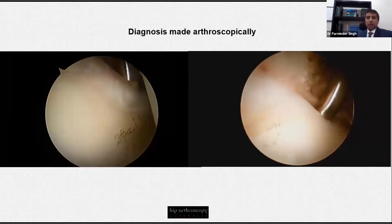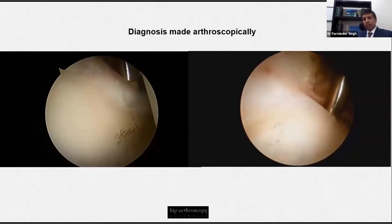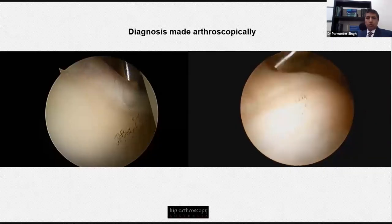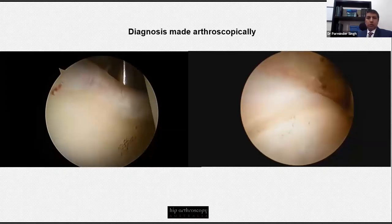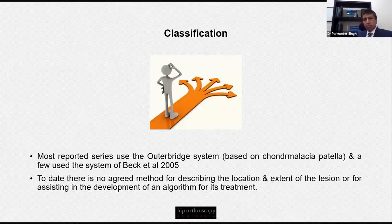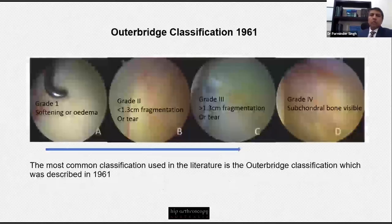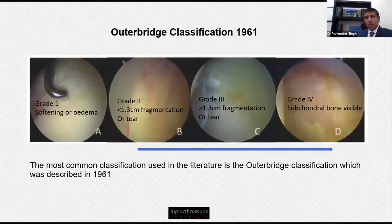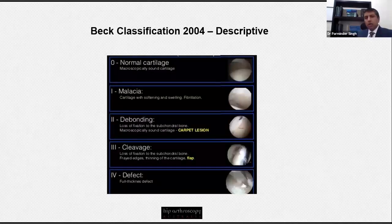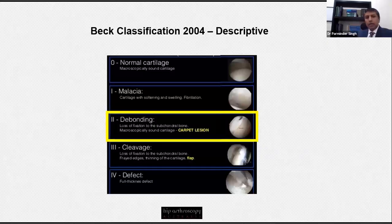Once a wave sign is diagnosed, one must classify the lesion. The most widely reported classification systems in the literature are the Outerbridge and the Beck classifications, but there is no universal agreement on which to use. The Outerbridge classification was originally designed for the knee based on the patella and doesn't really describe what we find in the wave sign. Martin Beck was the first to describe the wave sign in his classification, marking it as grade 2 and describing the cartilage lesion as a carpet lesion, though it didn't quantify the lesion.